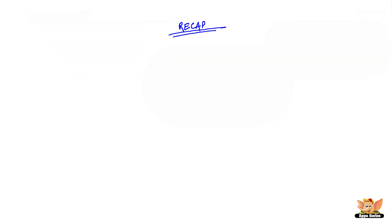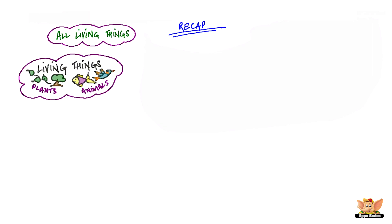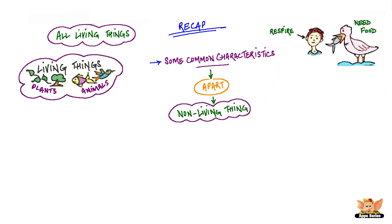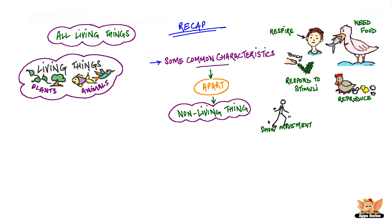Let's have a quick recap of all that we've talked about living things around us. We have seen that all living things seem to have some common characteristics that set them apart from non-living things. They all need food, respire, respond to stimuli, reproduce, show movement, grow, and die.